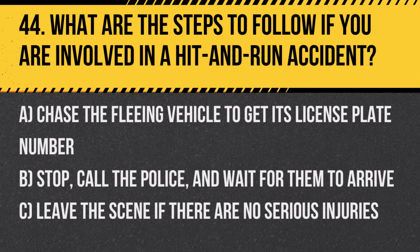Question 44: What are the steps to follow if you are involved in a hit and run accident? A. Chase the fleeing vehicle to get its license plate number. B. Stop, call the police, and wait for them to arrive. C. Leave the scene if there are no serious injuries. Answer: B. Stop, call the police, and wait for them to arrive. It is important to report the incident and provide information while remaining at the scene.